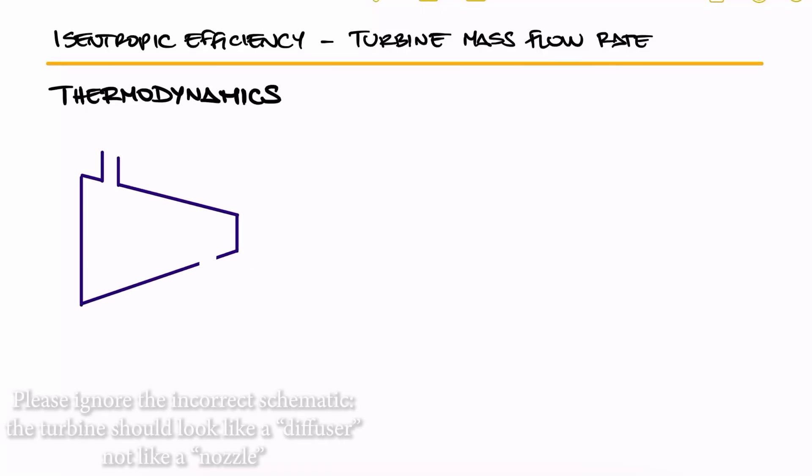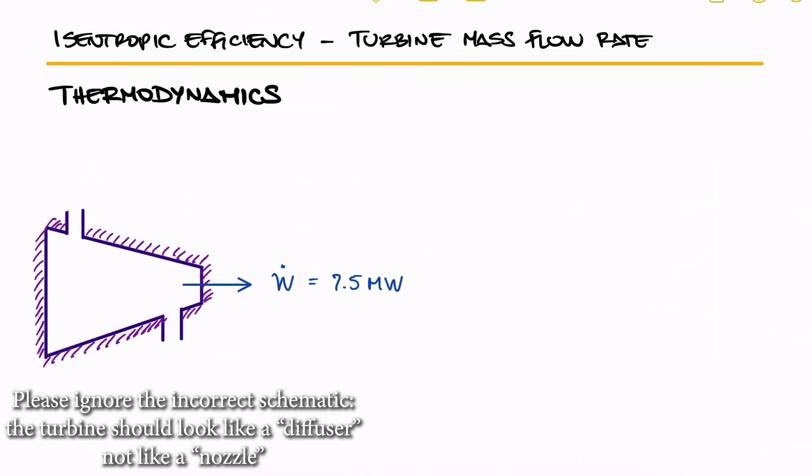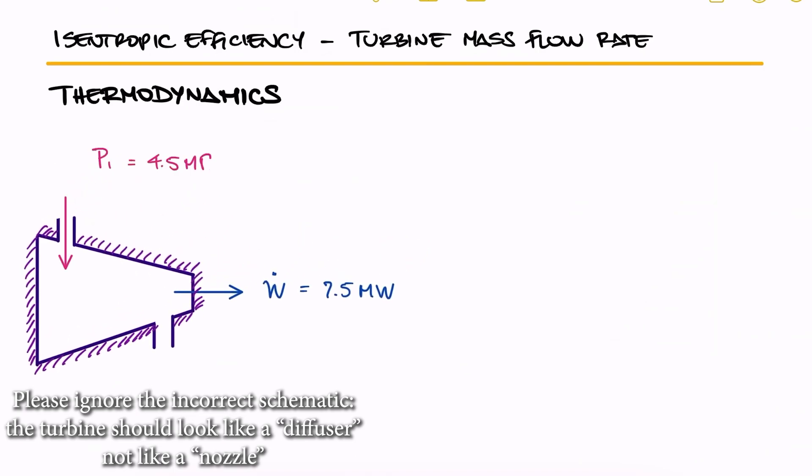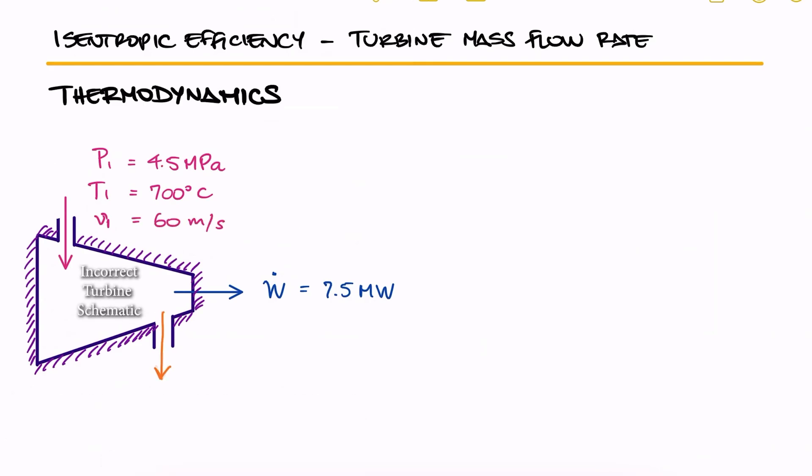An adiabatic turbine with a power output of 7.5 megawatts receives steam at 4.5 megapascals, 700 degrees Celsius, and 60 meters per second, and it exhausts the steam at 100 kilopascals, 200 degrees Celsius, and 130 meters per second. Determine the mass flow rate of the steam and the isentropic efficiency of the turbine.